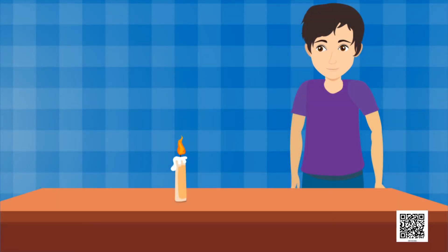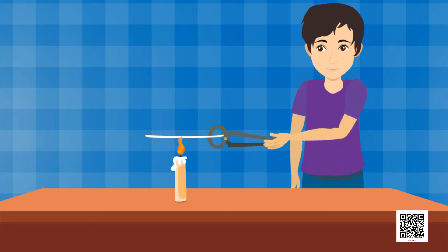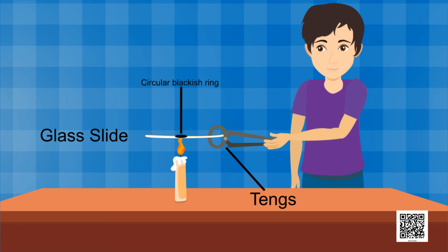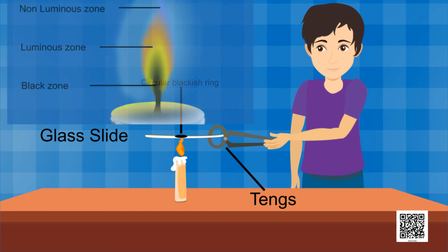Take a lighted candle. When the flame is steady, introduce a clean glass plate into the luminous zone of the flame. Hold it there with a pair of tongs for about ten seconds and then remove it. You will observe a circular blackish ring formed on the glass plate, indicating the deposition of unburnt carbon particles present in the luminous zone. That is why this zone is also called the middle zone of partial combustion.